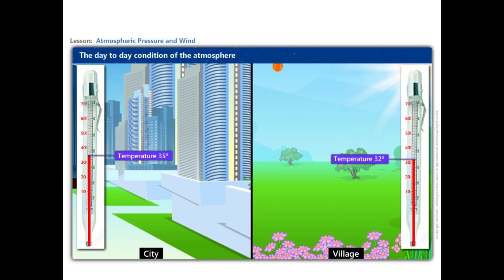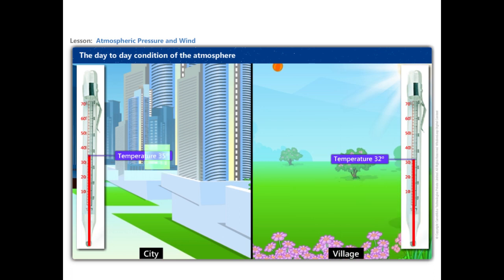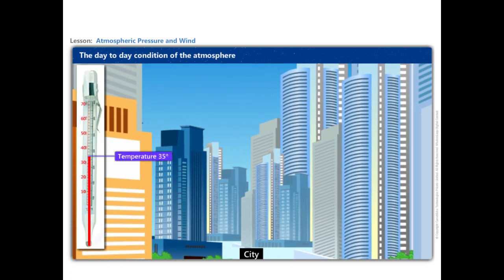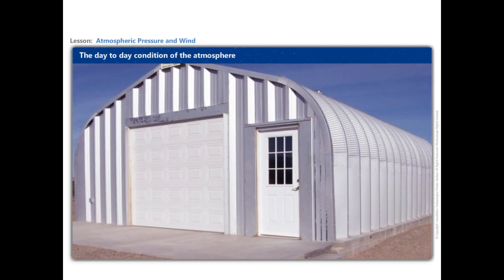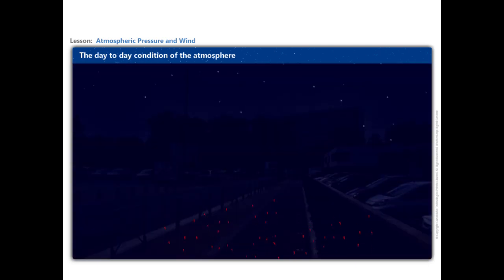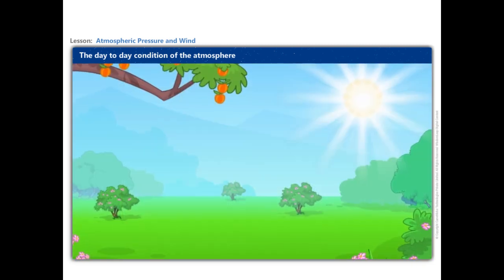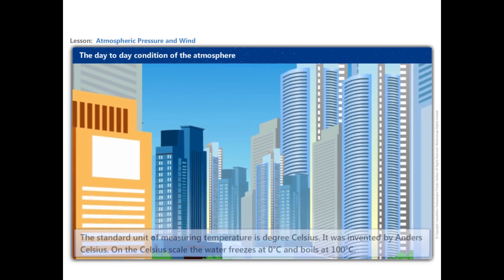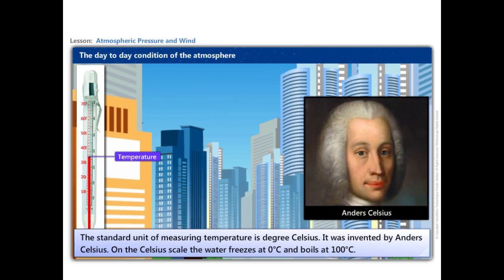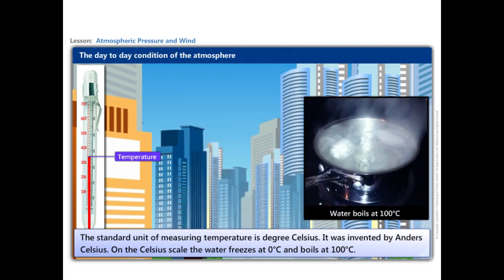Temperature in cities is much higher than that of villages. The crowded high-rise buildings of cities trap the warm air and thus raise the temperature. Even the concrete and metals in buildings and asphalt of roads get heated up during the day, and this heat is released during the night. On the other hand, the presence of greenery and absence of concrete roads and buildings make villages much more pleasant than cities. The standard unit of measuring temperature is degree Celsius, invented by Anders Celsius.